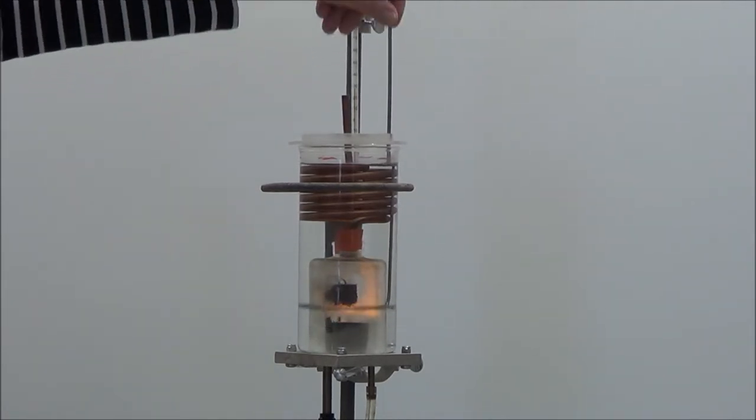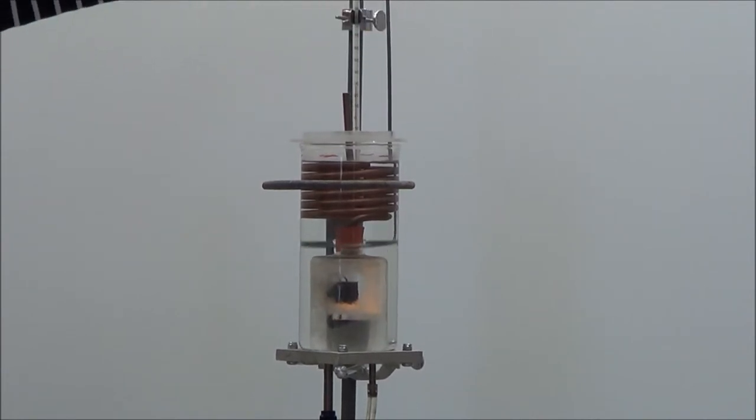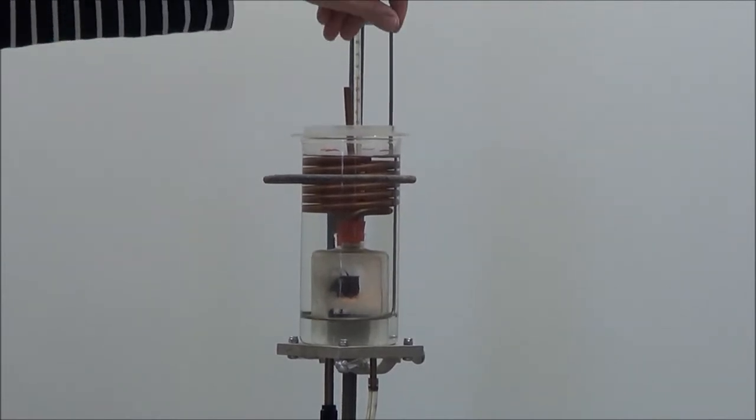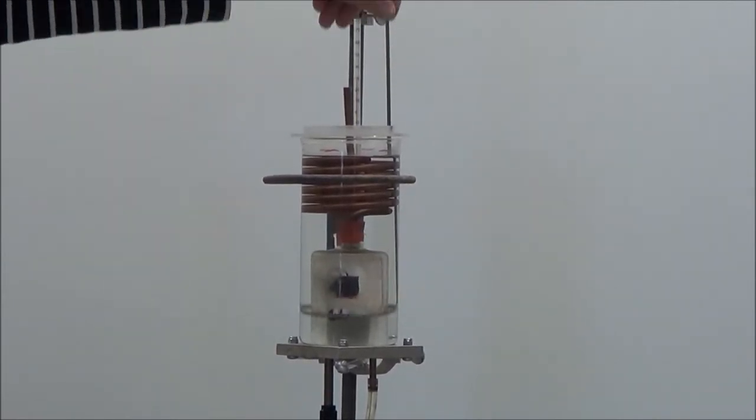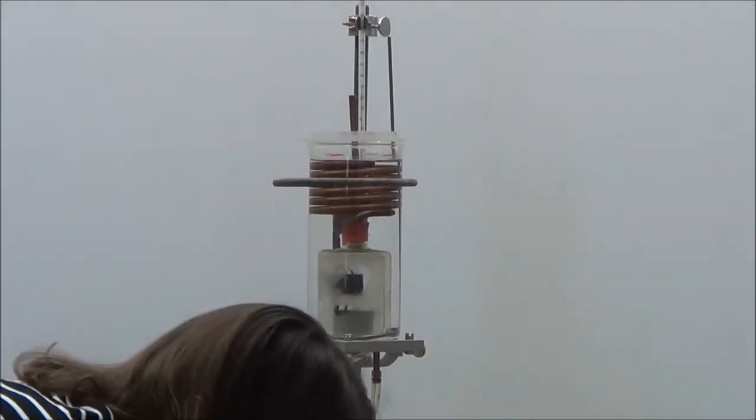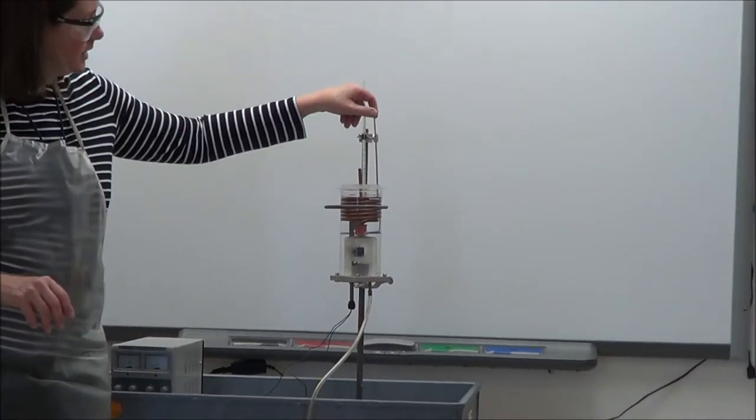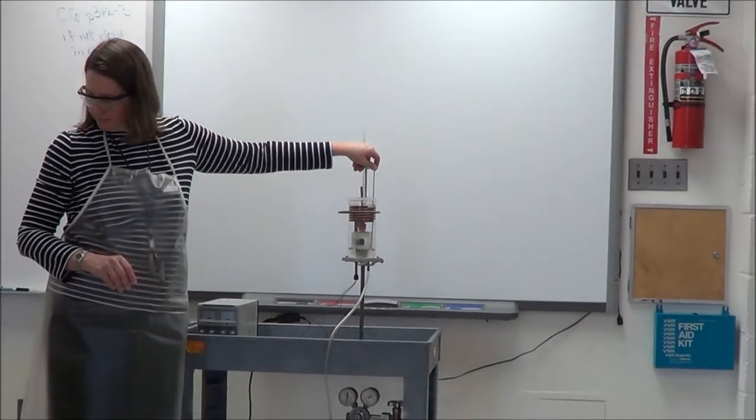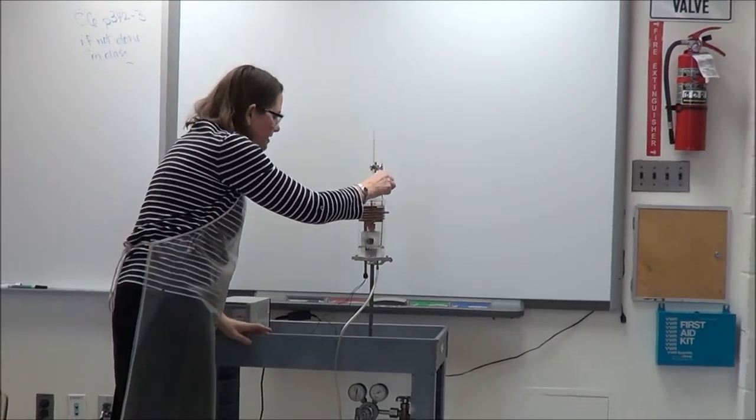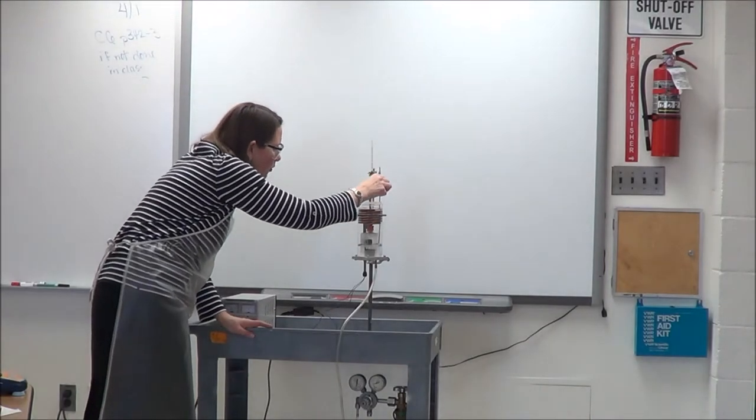We're going to let this burn completely. Looks like it's starting to fade down a little bit. When it stops, I'll turn off the oxygen. But then I'll keep stirring until I get the highest temperature reached. So the burning has stopped. I'll stop the oxygen, then continue stirring. And I want to continue stirring until the highest temperature is reached to make sure that all the heat released from the bread has gotten into the water.